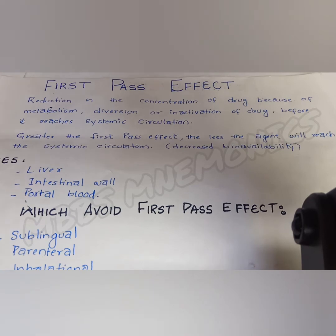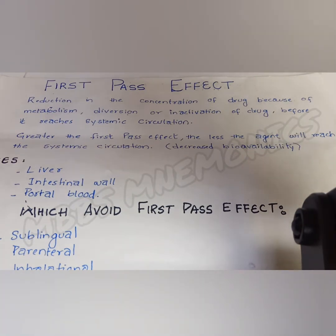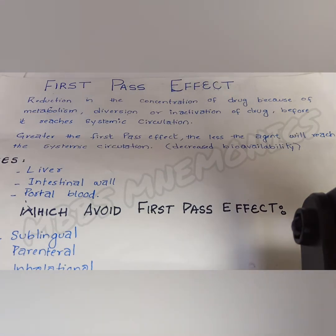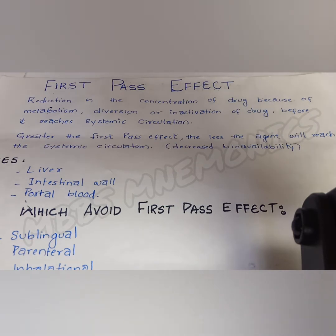The first pass effect is called the first pass effect because the drug is passing for the first time through the places responsible for this effect. The next time the drug passes through these places, we do not consider its loss as first pass effect. It is considered only for the first time when it passes through these places.